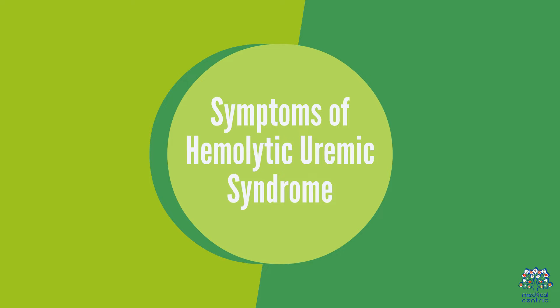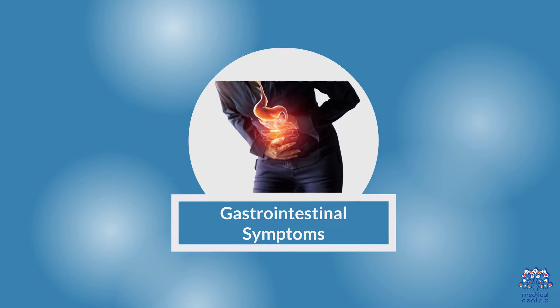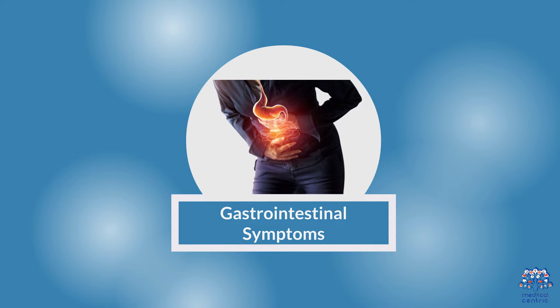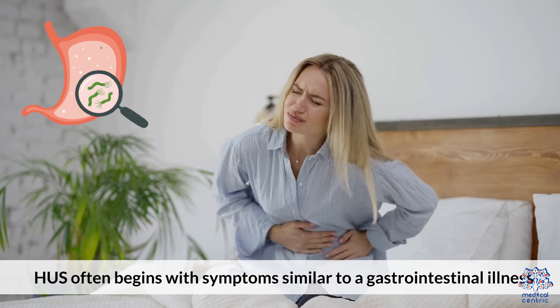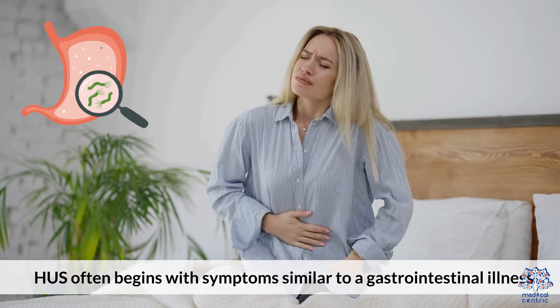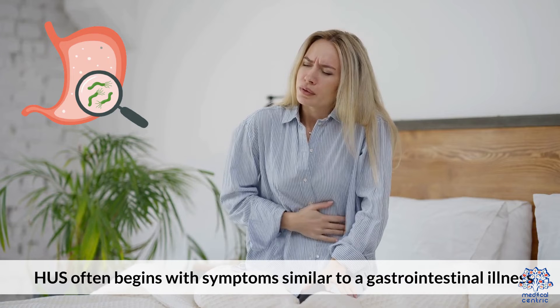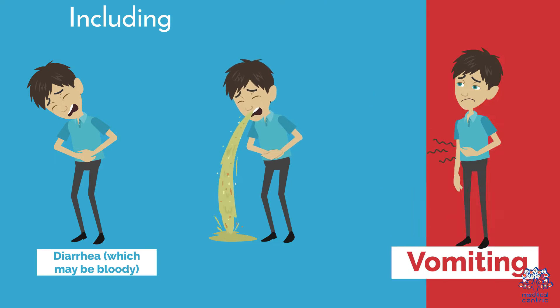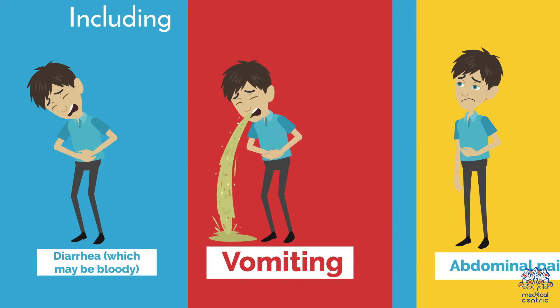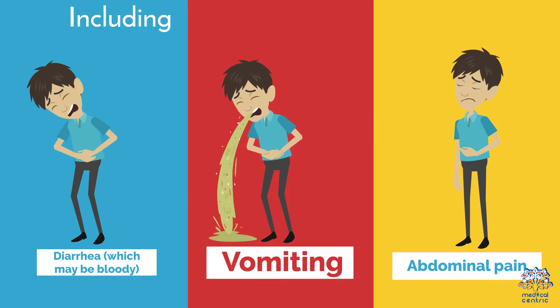Symptoms of Hemolytic Uremic Syndrome. 1. Gastrointestinal Symptoms: HUS often begins with symptoms similar to gastrointestinal illness, including diarrhea, which may be bloody, vomiting, and abdominal pain.